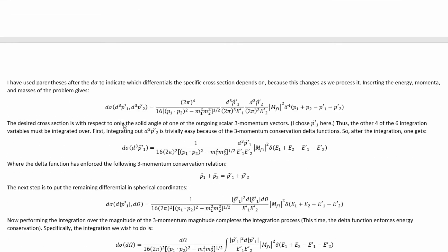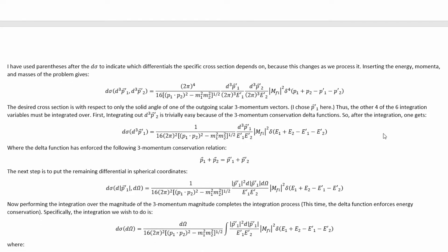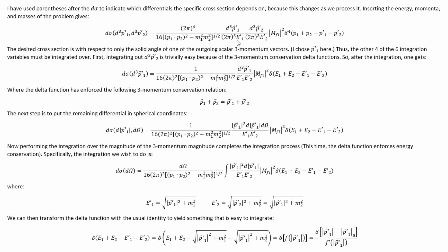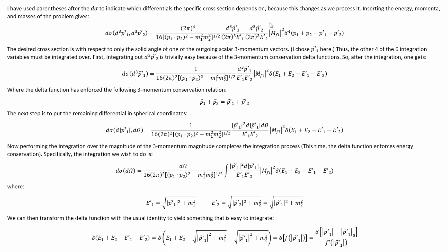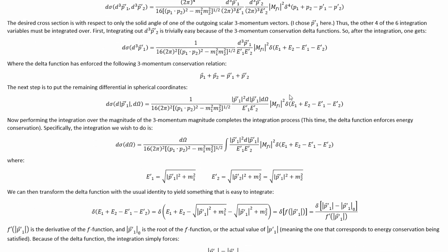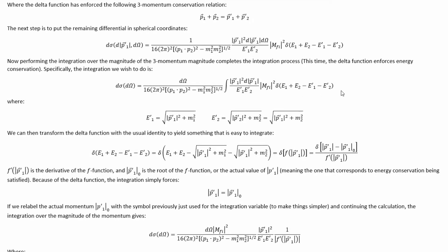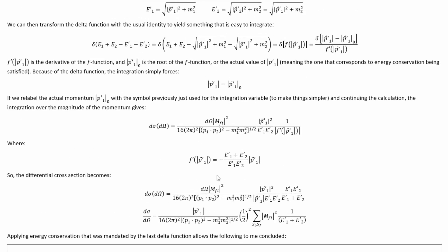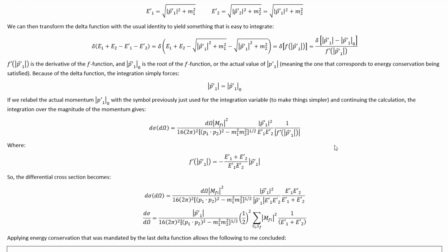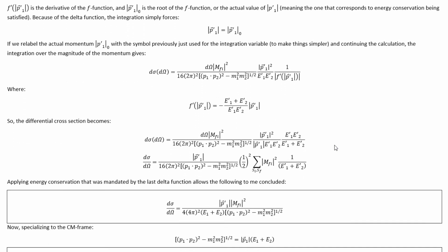If we plug in the momenta relevant to the problem, the formula simplifies down to that. The desired cross-section is with respect to only the solid angle of one of the outgoing scalar 3-momentum vectors — I chose p₁'. Thus, the other four of the six integration variables must be integrated over. I've done this integration process repeatedly in multiple differential scattering cross-section videos on my channel. Basically, we use the 3-momentum conservation delta functions to integrate over the 3-momentum variables, leaving us with this, then switch to spherical coordinates to reveal the solid angle differential, and integrate over the momentum magnitude using the energy conservation delta function.